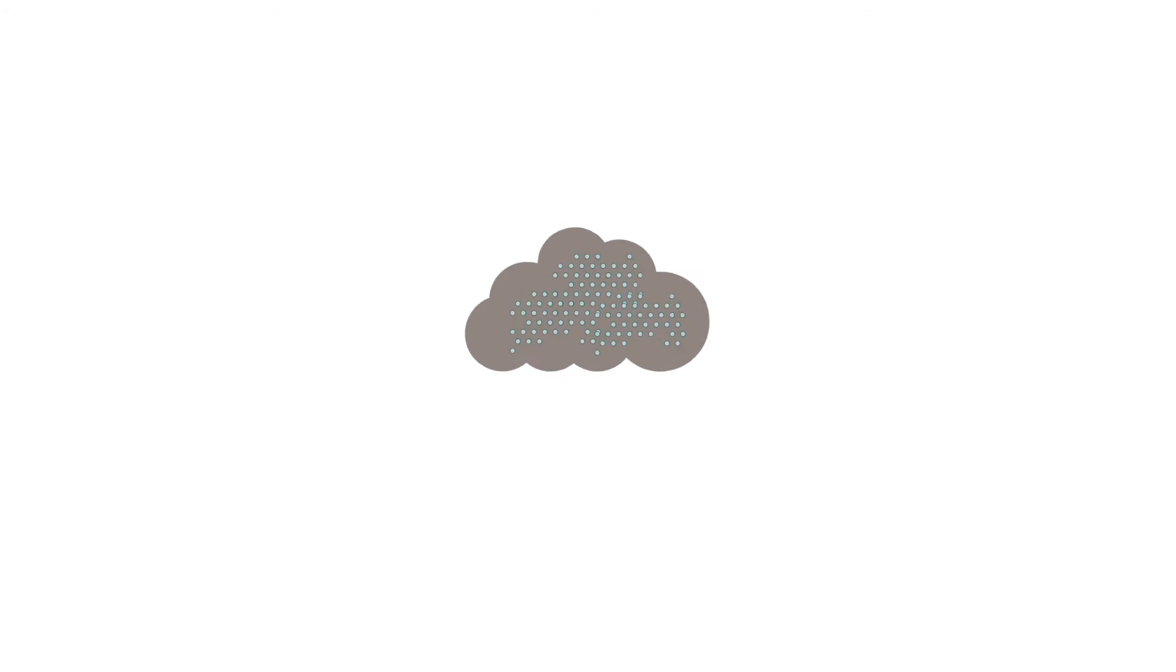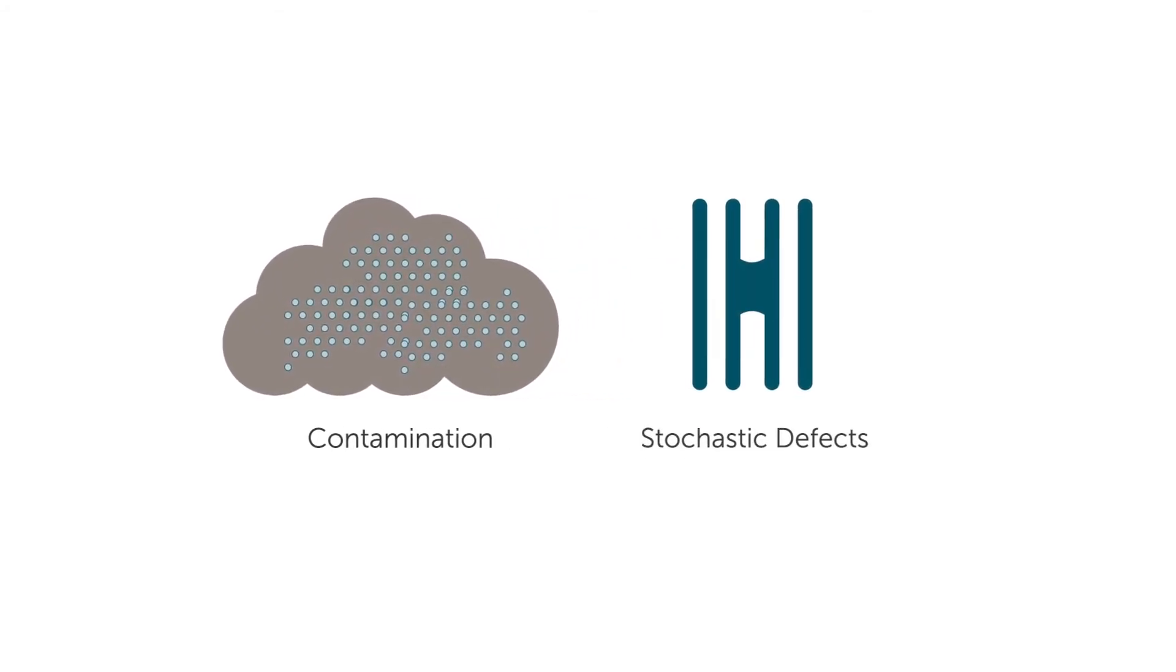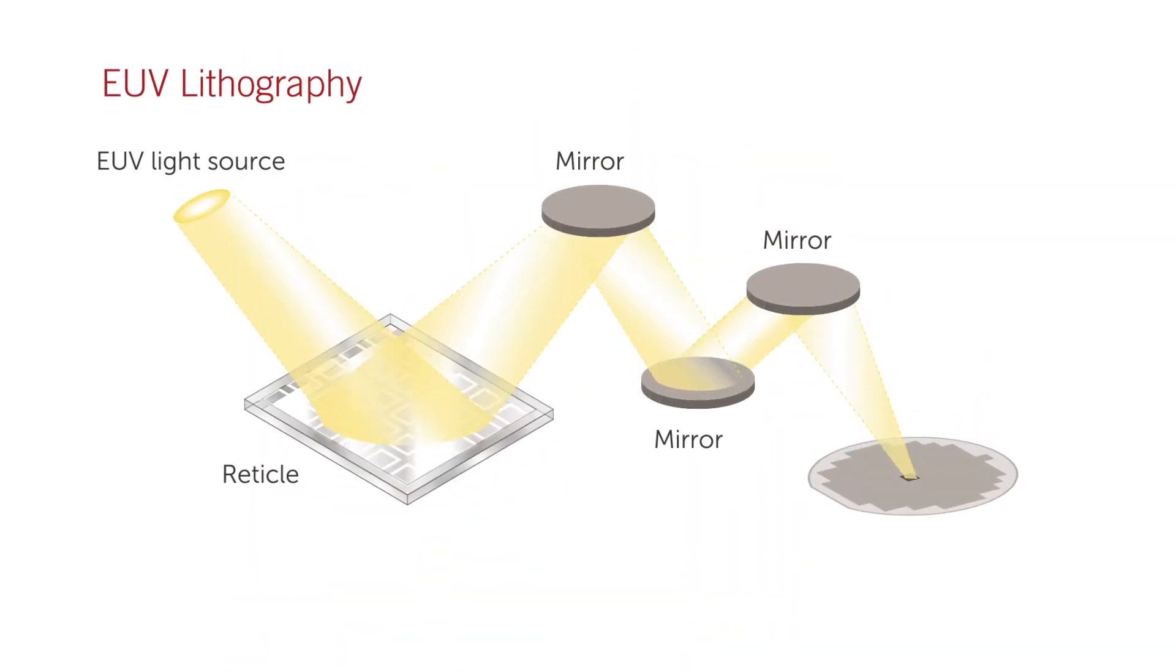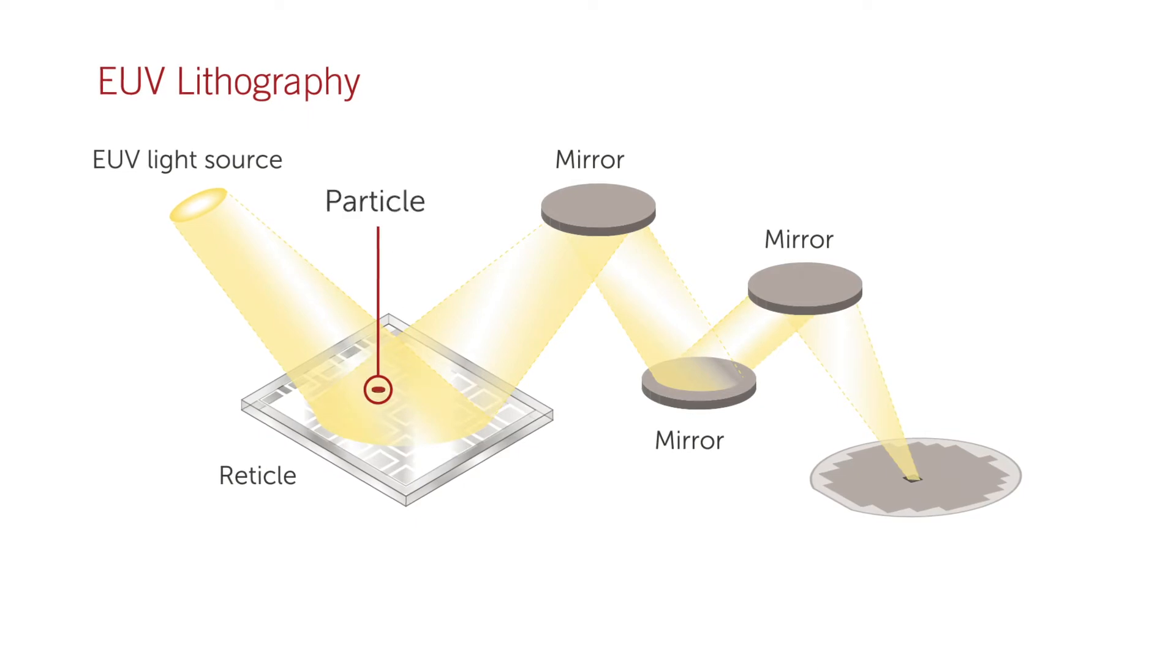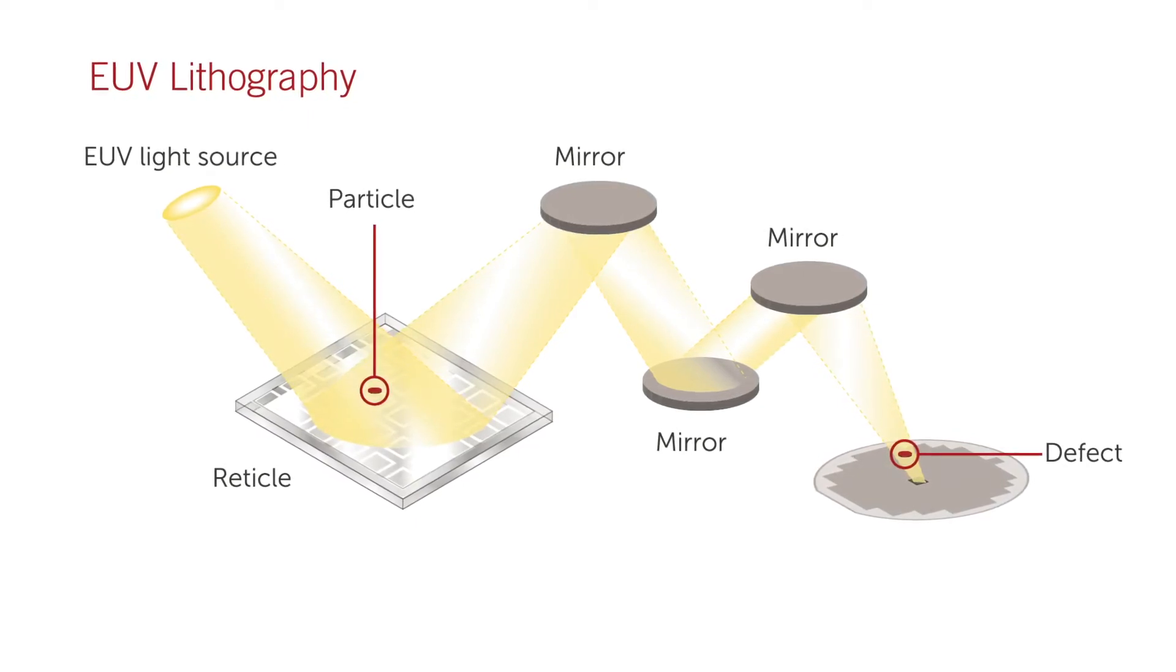However, the EUV process is inherently sensitive to particle contamination and variability due to stochastic defects. First, without a protective pellicle, even a nanometer particle defect will be replicated as a feature on wafer and kill yield.